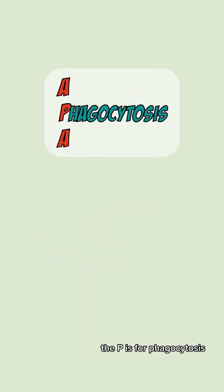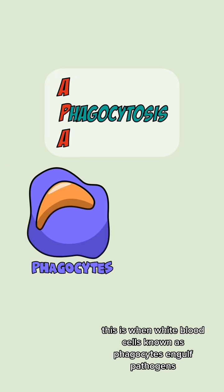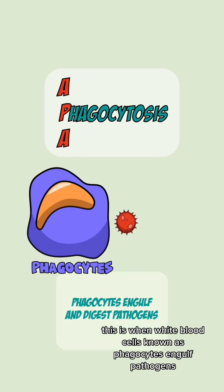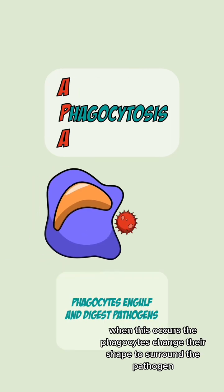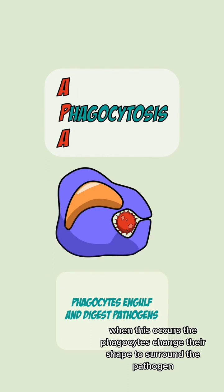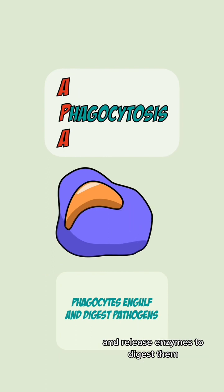The P is for phagocytosis. This is when white blood cells known as phagocytes engulf pathogens. When this occurs, the phagocytes change their shape to surround the pathogen and release enzymes to digest them.